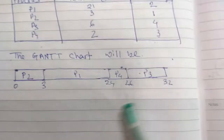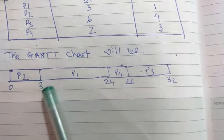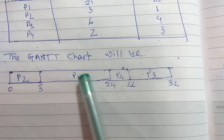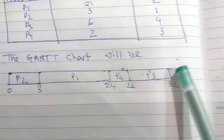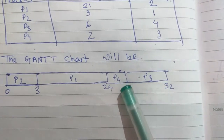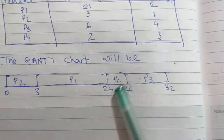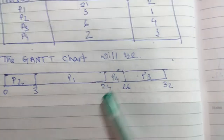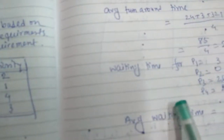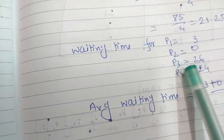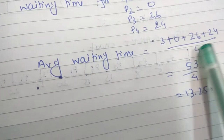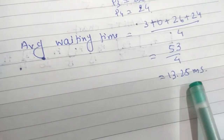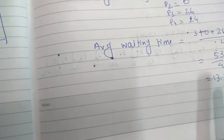Now waiting time: P1 waits 3 milliseconds before starting execution, so waiting time for P1 is 3. Waiting time for P2 is 0. For P3 it is 26 milliseconds, and for P4 it is 24 milliseconds. Average waiting time is (3 + 0 + 26 + 24) / 4 = 53 / 4 = 13.25 milliseconds.